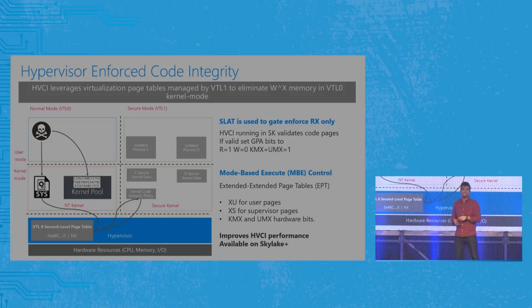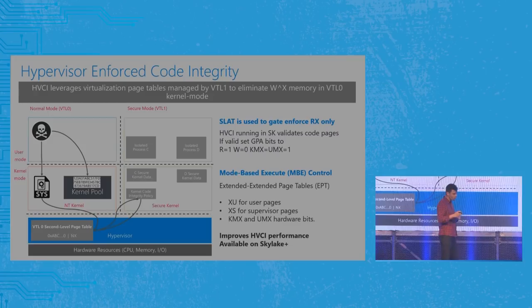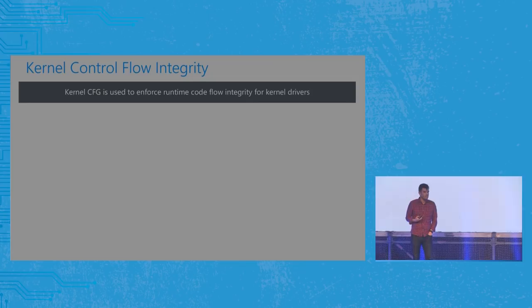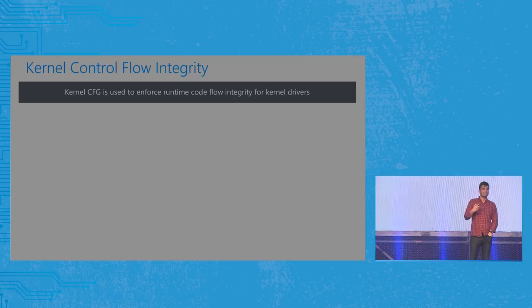The second thing we get from HVCI when it's enabled is Kernel Control Flow Integrity. Kernel CFG essentially enforces an allow-list of forward code — jumps, calls, etc. — at runtime.